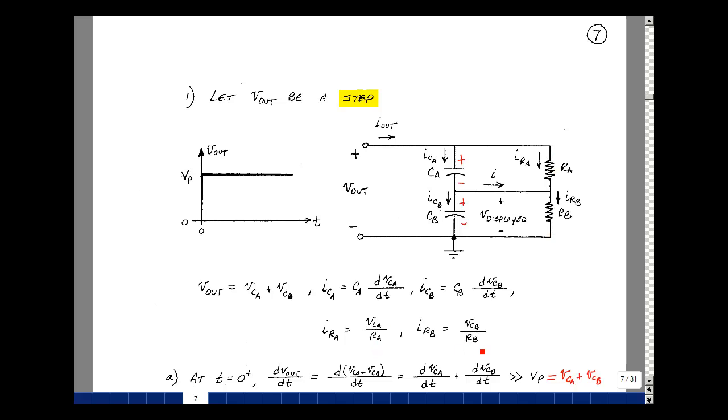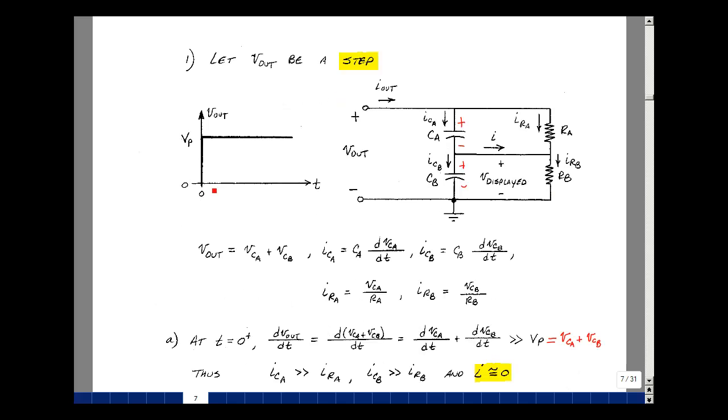And likewise over here. Now the current I in this short circuit is no longer going to be 0 because we're going to see a very large change in current on this side, but not on this side. At t equals 0 plus, we have a very rapid change in voltage.